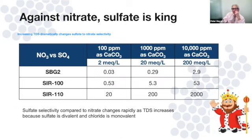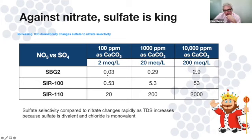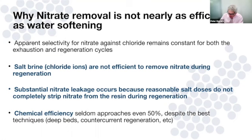Putting it all together for nitrate against sulfate: because these are binary equations with chloride as the reference ion, we calculate the nitrate-to-chloride and sulfate-to-chloride relationships, then ratio the two. SPG2 does not like nitrate relative to sulfate; SIR-110 loves nitrate. Overall, nitrate removal is not nearly as effective as softening — you get substantial nitrate leakage and don't get anywhere near the same chemical efficiency.